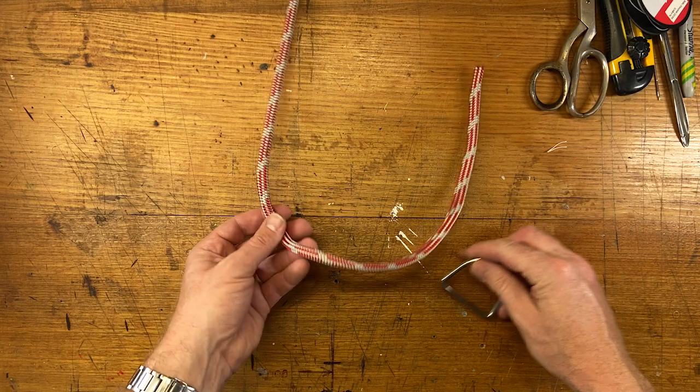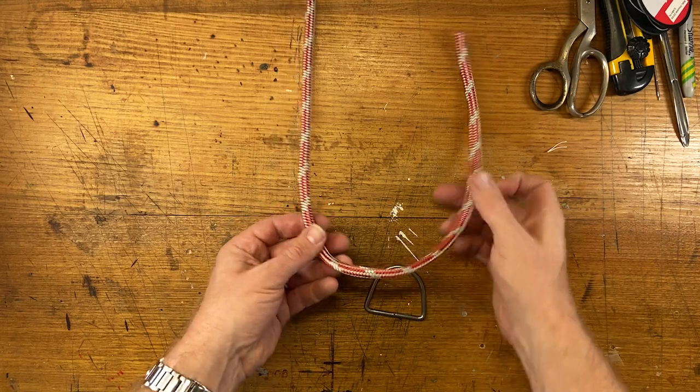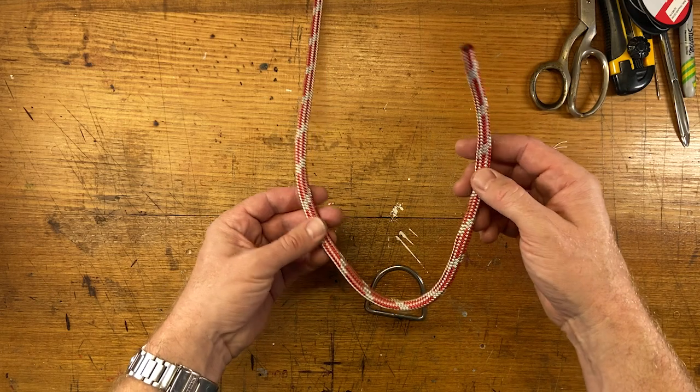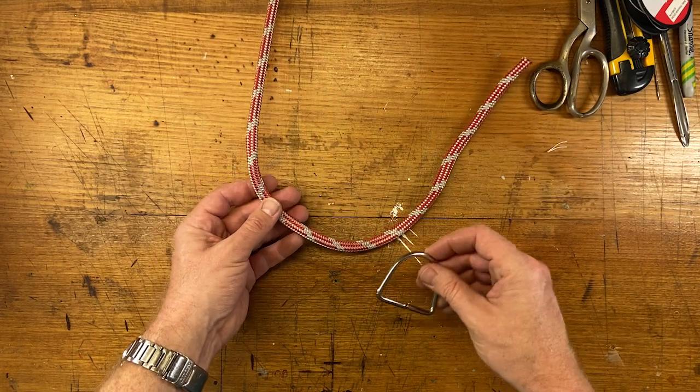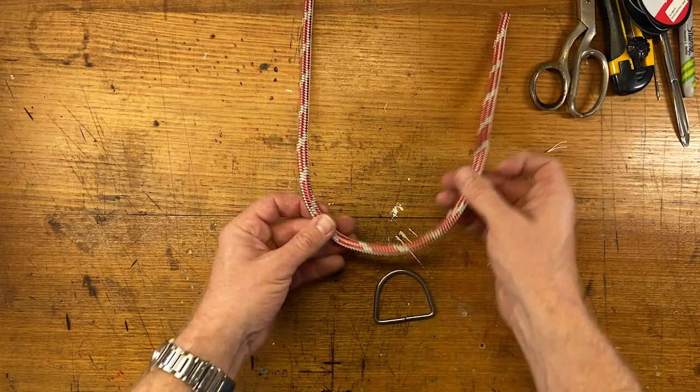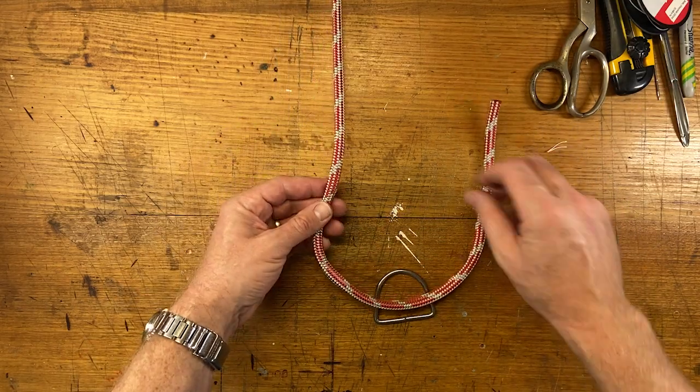So the knot I use is called an anchor road hitch, which is actually a combination of two knots, a knot and a hitch. It's a round turn and then a bowline, depending on where you grew up. Let's start with the bowline.